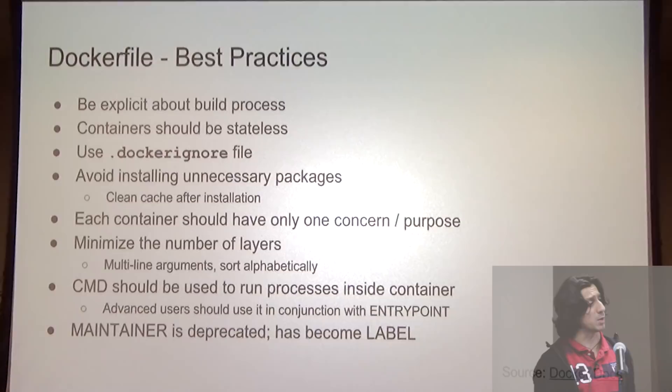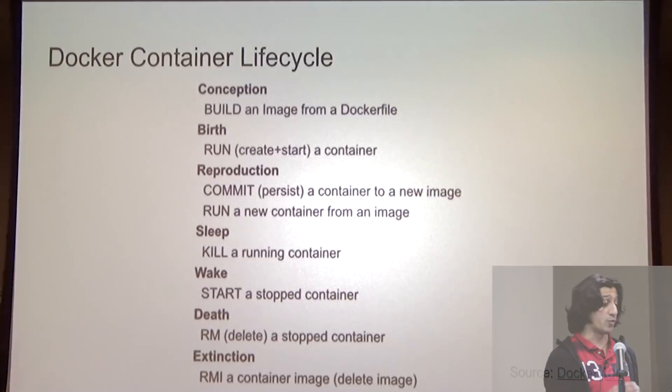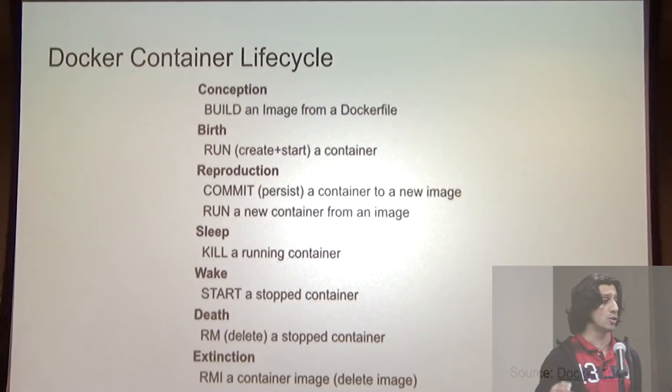Let's review the Docker container lifecycle one more time. We have a Dockerfile — we build an image using docker build. From that image we can create a container with docker run. If we want to kill a running container, we use docker kill with the container name, which sends a SIGKILL to the process inside. We can start a stopped container with docker start, delete a container with docker rm, and delete an image with docker rmi.